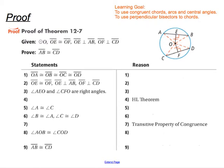Let's look at the proof of this theorem. We have OA equal to OB equal to OC equal to OD. The reason is that we're talking about radii of a circle — they're all radii of the exact same circle, so by definition they must be congruent. The second statement's reason is that it's the given information.